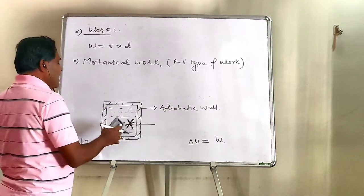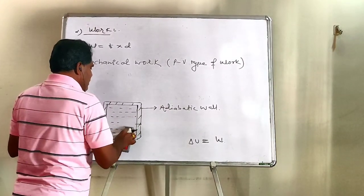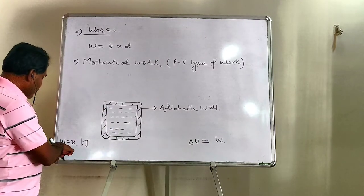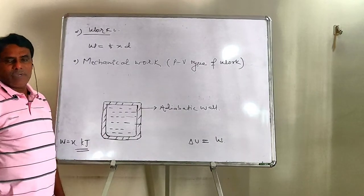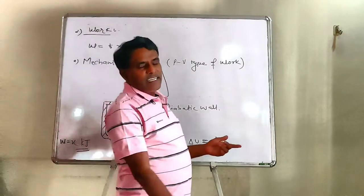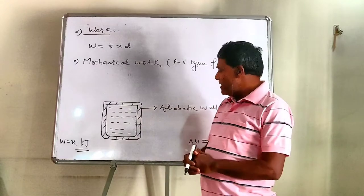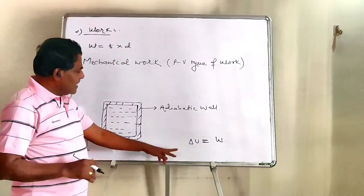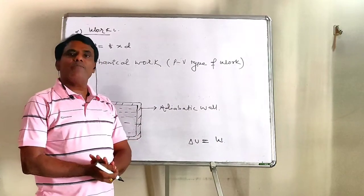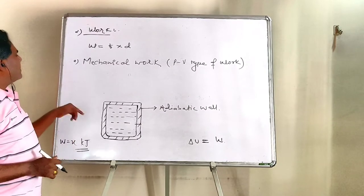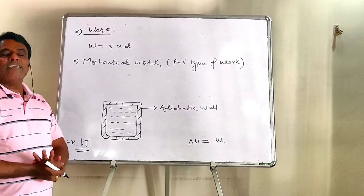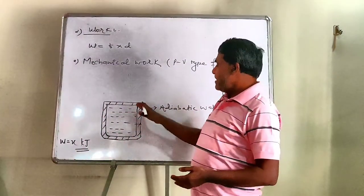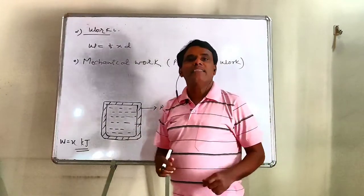Now suppose we bring about the same amount of work by electrical means — if we heat the water electrically, doing work equal to x kilojoules, the electrical energy is converted into heat, temperature of water increases, and the increase in internal energy is again equal to W. If electrical work done equals mechanical work done, the increase in temperature and increase in internal energy are found to be the same. Thus, internal energy change depends upon initial and final state, not upon the path — whether work is done by electrical or mechanical means. This confirms that internal energy is a state function.